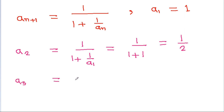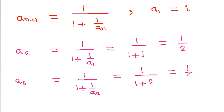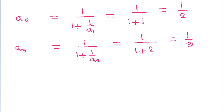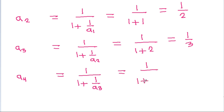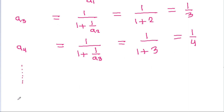And a_3 will be equal to 1/(1 + 1/a_2), and since a_2 is 1/2, we get a_3 equal to 1/3. And a_4 will be equal to 1/(1 + 1/a_3), and since a_3 is 1/3, we get a_4 equal to 1/4. So a_2 is 1/2, a_3 is 1/3, a_4 is 1/4. In the same way, a_{2009} will be equal to 1/2009.